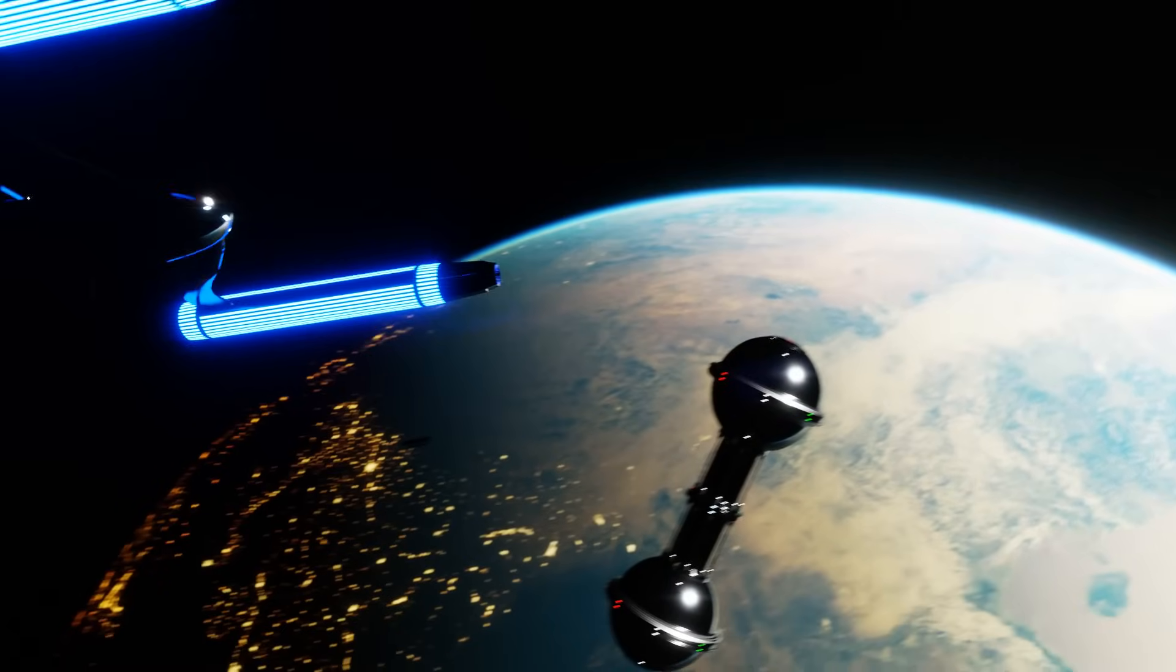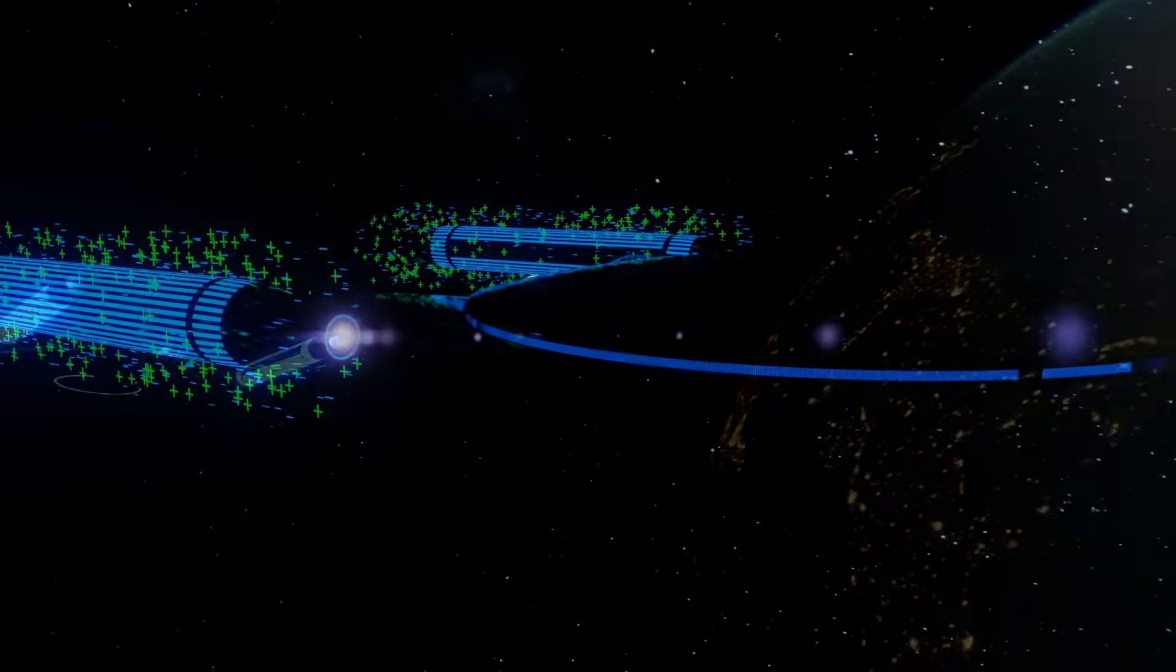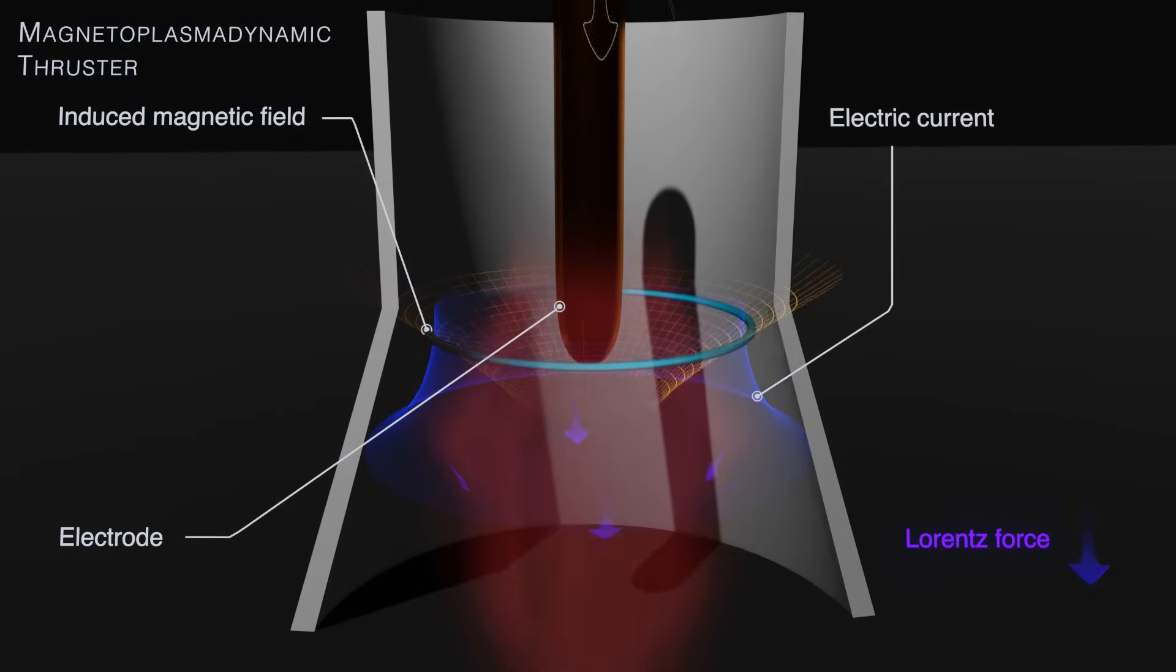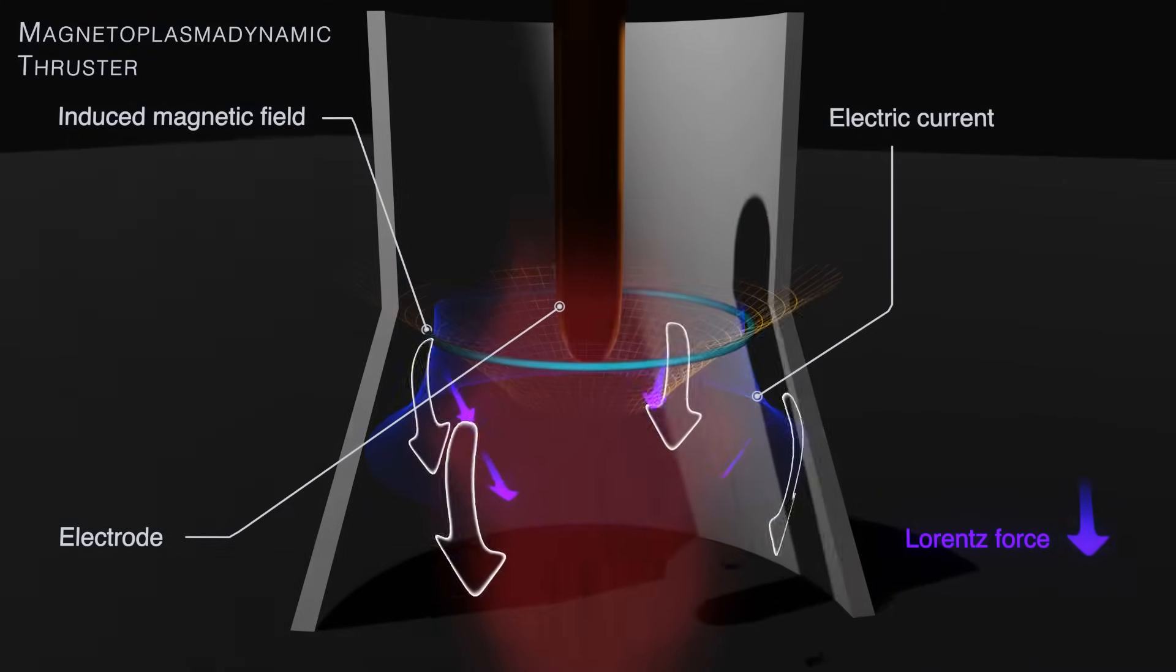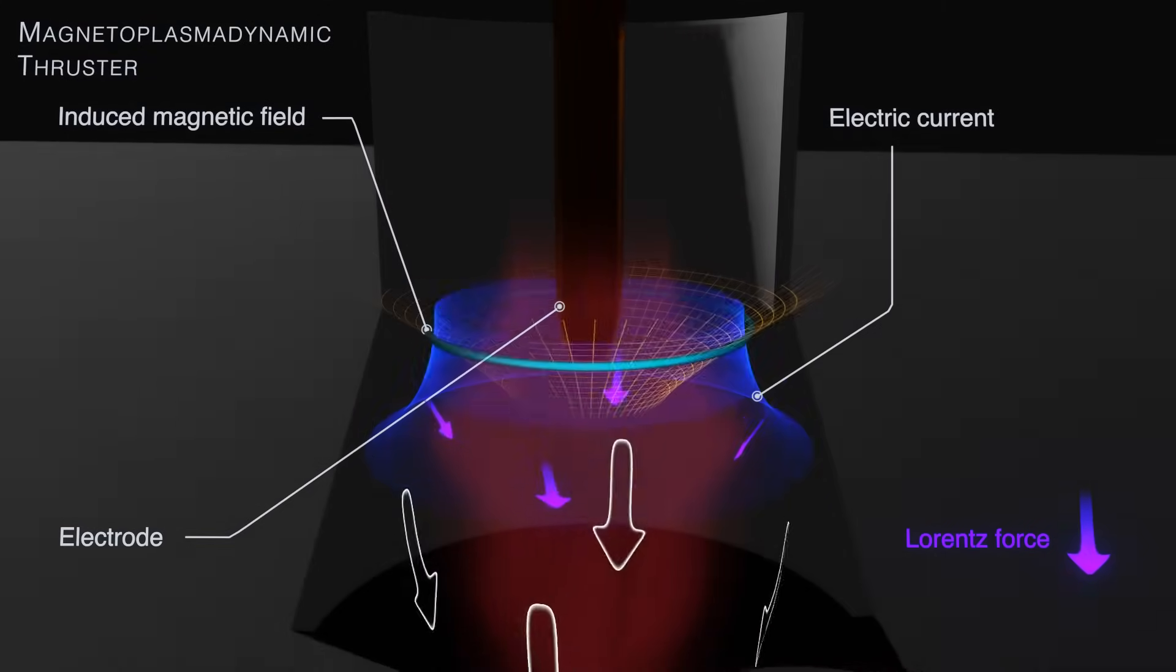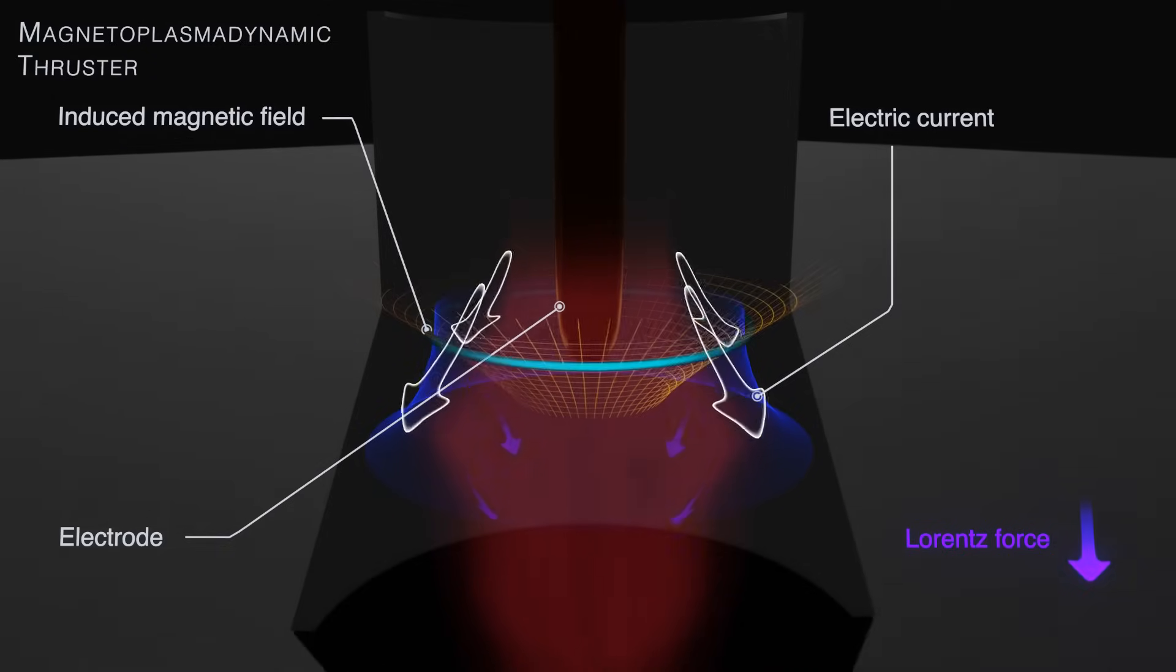MHD propulsion in space. The simplest and easiest form of MHD space propulsion are MHD jet engines, or rather MHD rocket engines. These can utilize the Lorentz force to directly accelerate a cold plasma.